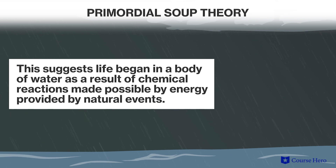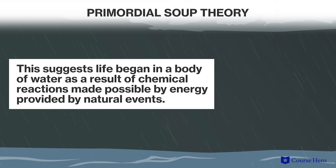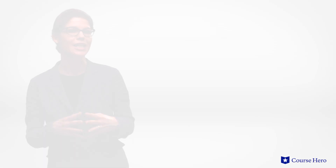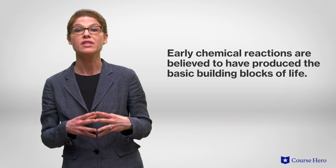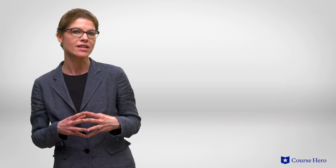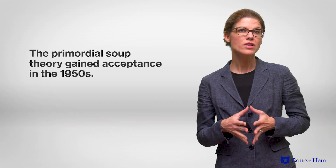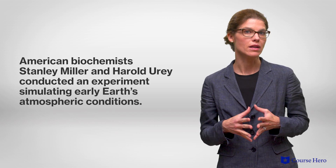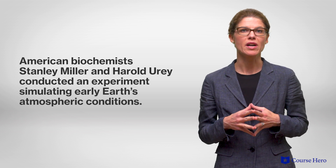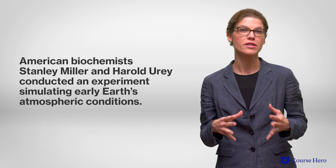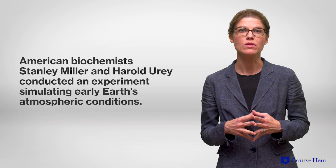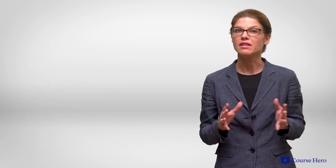The primordial soup theory suggests that life began in a body of water as a result of chemical reactions, made possible by energy provided by natural events, such as lightning. These chemical reactions are believed to have produced the basic building blocks of life — organic matter that eventually evolved into early forms of life. The primordial soup theory gained acceptance in the 1950s, when biochemists Stanley Miller and Harold Urey conducted an experiment simulating early Earth's atmospheric conditions. This experiment demonstrated that several organic compounds could be formed spontaneously under these conditions.